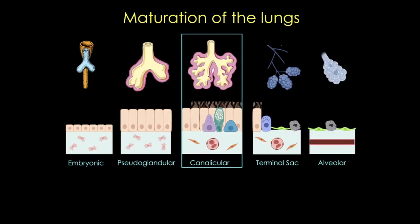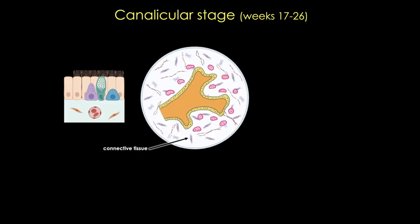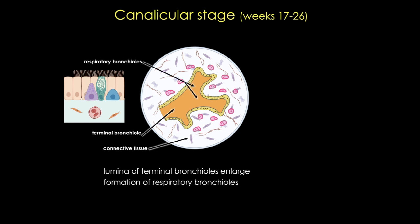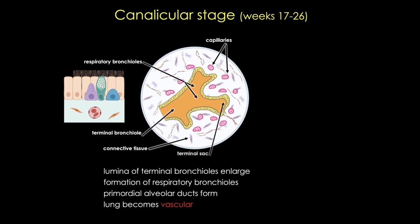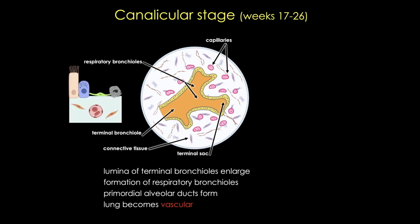Next, we have the canalicular stage. This stage overlaps the pseudoglandular stage because the cranial parts of the lung mature faster than the caudal ones, a theme repeated over and over again during embryonic development. This stage also overlaps the terminal sac or saccular stage. The lumina of the bronchi and terminal bronchioles will enlarge, and the terminal bronchioles will begin to branch, forming respiratory bronchioles. By 24 weeks, each terminal bronchiole will have at least two respiratory bronchioles, and each of those will form three to six passages called primordial alveolar ducts. At this point, the lung is highly vascular. By 26 weeks, some thin-walled primordial alveoli, or terminal sacs, will begin to form, along with type 1 pneumocytes that perform gas exchange and type 2 pneumocytes that will produce surfactant.